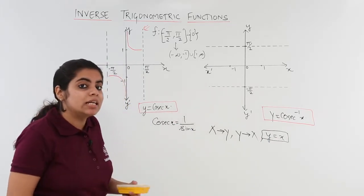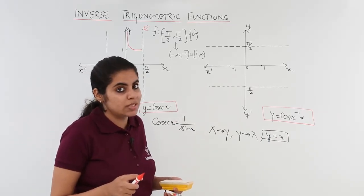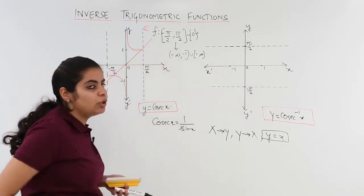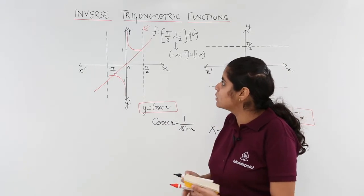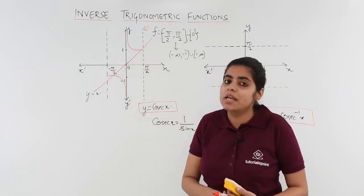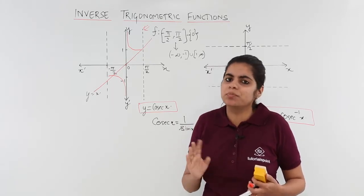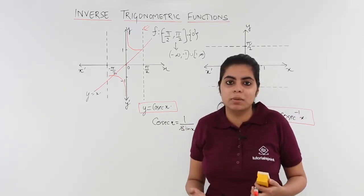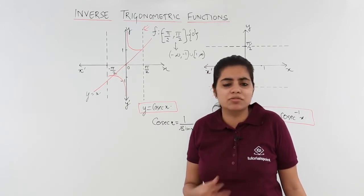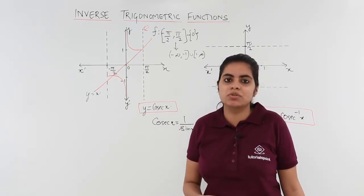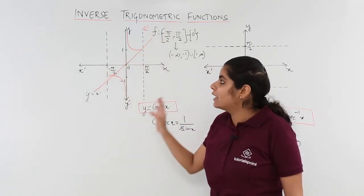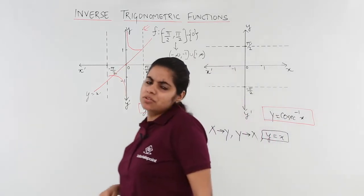Y is equal to x is a line at 45 degrees to the coordinate axes — a slanting line. For the mirror image, the reflection means above becomes below, below becomes above, left becomes right, right becomes left. People who have watched my previous videos on sin inverse x, cos inverse x, tan inverse x, and cot inverse x will understand this clearly.